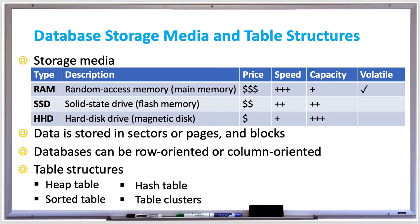A table structure is a scheme that organizes rows and blocks for storage. Besides row and column-oriented structures, there are a few alternate table structures such as heap tables, sorted tables, hash tables, and table clusters. A heap table is a table stored without any specific order imposed on the rows. When rows are inserted into a heap, there's no way to ensure the data will be written or remain in the same order. Heaps can be used as staging tables for large, unordered insert operations because the insert operation is pretty fast.